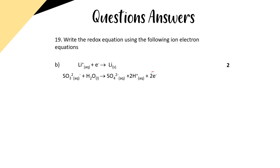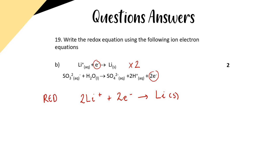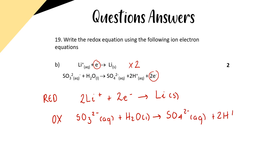For 19b, I've got two electrons at the bottom and one electron at the top. I'll multiply the top equation by two to get the same number of electrons. That gives: 2Li⁺(aq) + 2e⁻ → 2Li(s) — this is reduction. For the oxidation reaction, I rewrite it as is: SO₃²⁻(aq) + H₂O(l) → SO₄²⁻(aq) + 2H⁺(aq) + 2e⁻. Now I have two electrons on the left and two electrons on the right, so I can cancel those out.